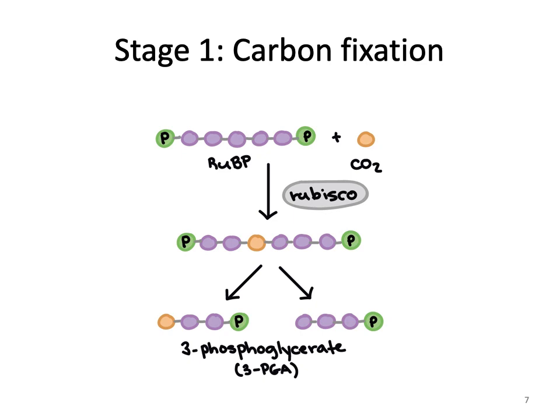The first stage of the Calvin cycle is a process called carbon fixation. In this process, the Calvin cycle incorporates carbon from carbon dioxide into an organic molecule called RuBP. This reaction occurs with the aid of an enzyme called Rubisco. The reaction instantly makes a six-carbon compound that will split into two molecules of a three-carbon compound, 3-phosphoglyceric acid, or 3-PGA.